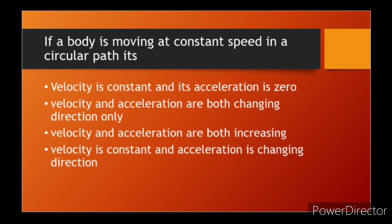If a body is moving at constant speed in a circular path, its answer is second: velocity and acceleration are both changing direction on it.